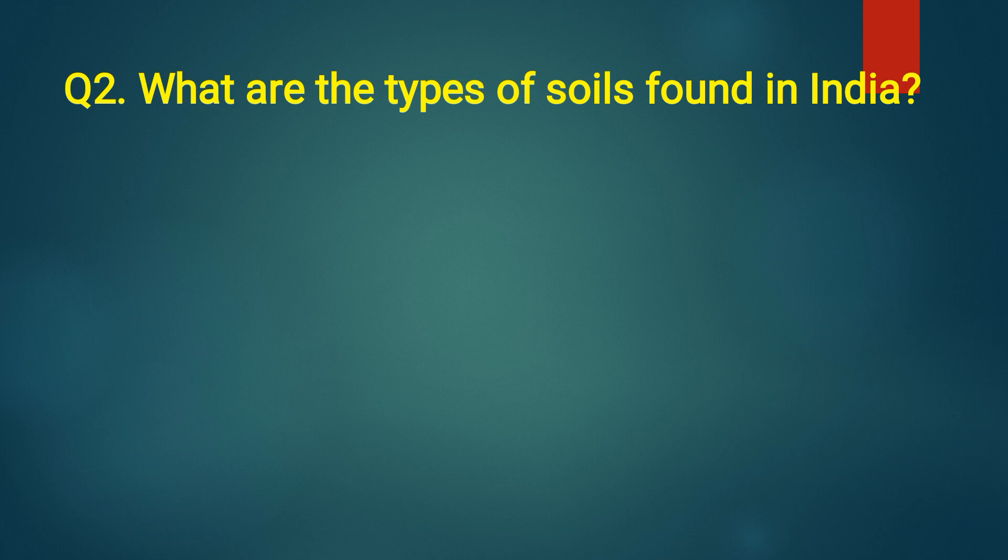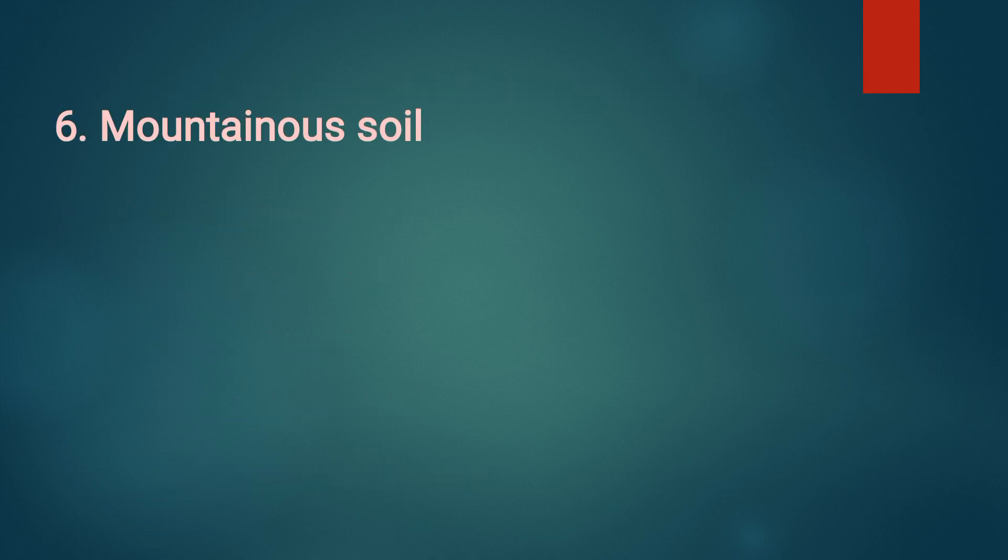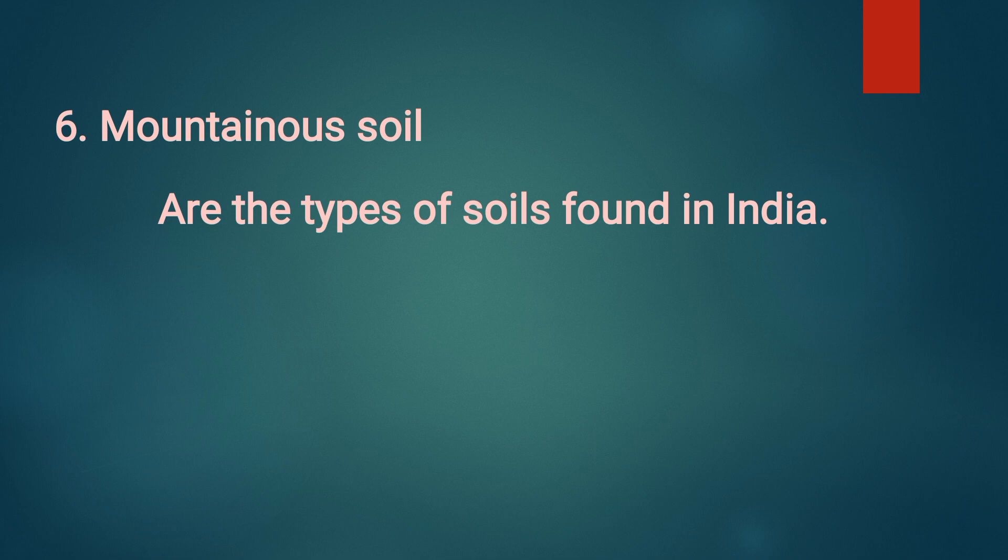Second question, what are the types of soils found in India? Answer, first one, alluvial soil. Second one, black soil. Third one, red soil. Fourth one, laterite soil. Fifth one, desert soil. And sixth one, mountainous soil. So total six types of soils are the types of soils found in India.